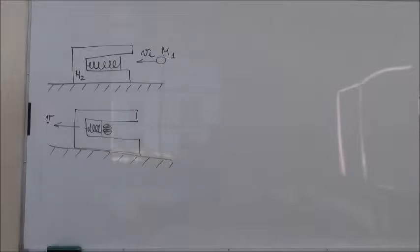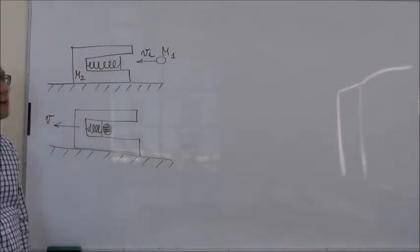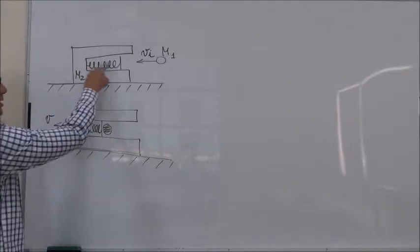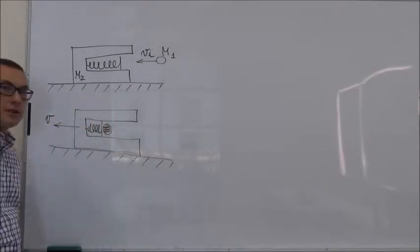Okay, so in this problem, we are given the barrel of a spring gun with a spring inside. The mass of the barrel is M2 and the barrel is sitting on a frictionless surface.